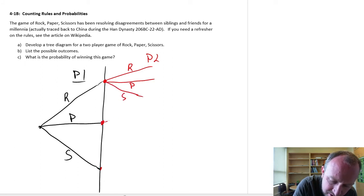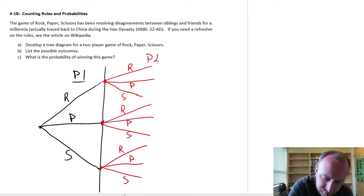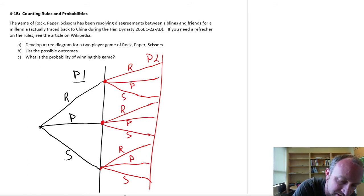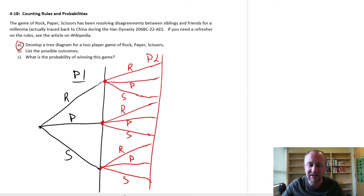And same here, rock, paper, or scissors. And same here, rock, paper, or scissors. So there we have now all of our possible combinations. And now what are the possible outcomes here? So we've produced part A, this is our tree diagram for this game.